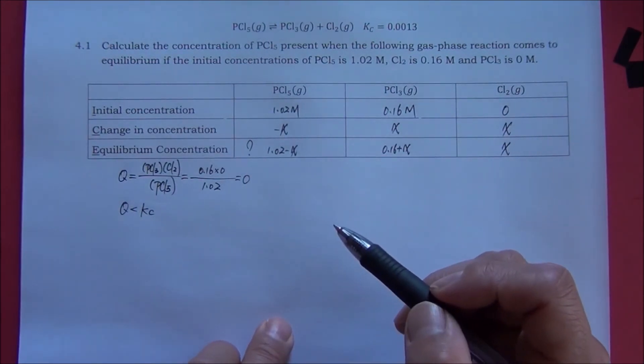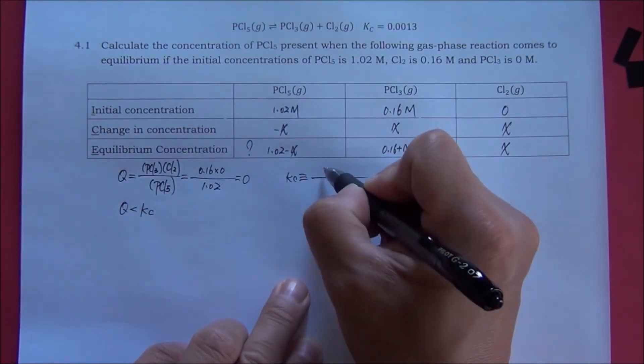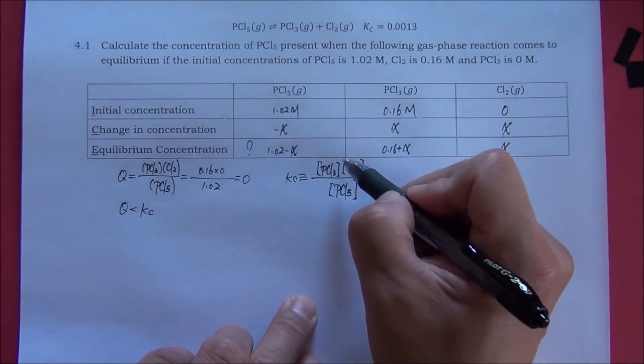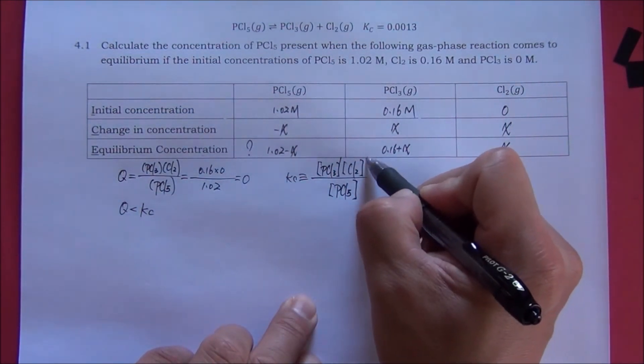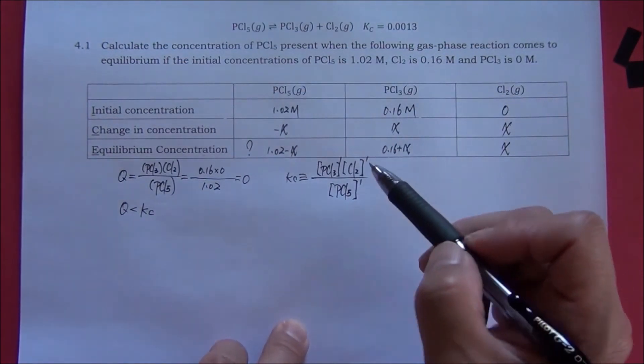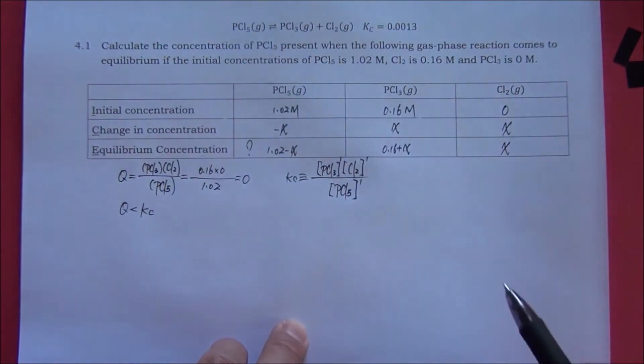Next, we are going to use the definition of the equilibrium constant to set up an equation. Let's put down the power term. Although they are 1, this will remind us the power term is equal to the coefficient of the corresponding chemical.